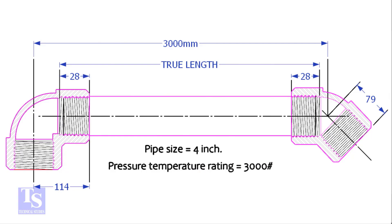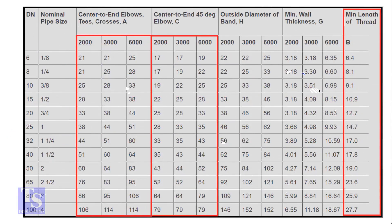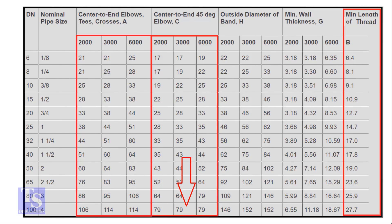Let's go through an example using 90-degree and 45-degree elbows. We're working with a 4-inch pipe, 3,000 pounds pressure rating, and a travel length of 3,000 millimeters. From the standard chart, for a 4-inch, 3,000 pounds 90-degree elbow, the take-off is 114 millimeters. For a 45-degree elbow, the take-off is 79 millimeters.